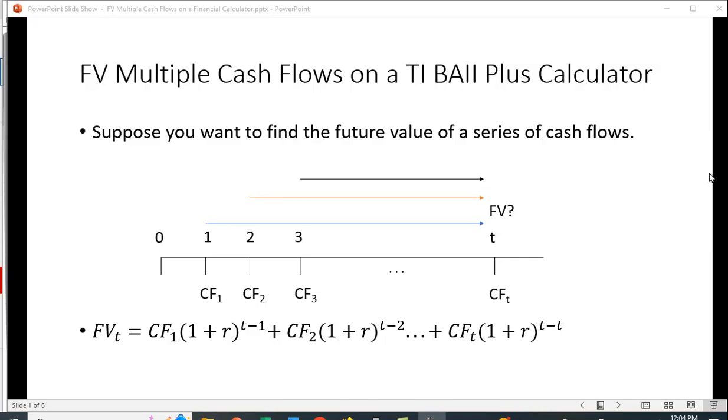Now suppose we have a series of cash flows, CF1, CF2, CF3, all the way out to CFT. How do we calculate the future value?